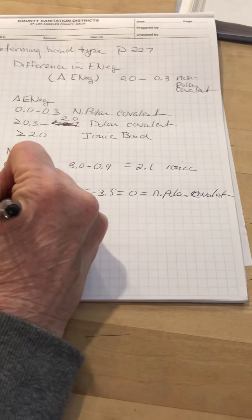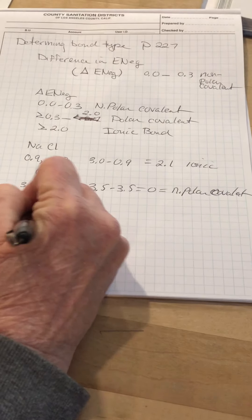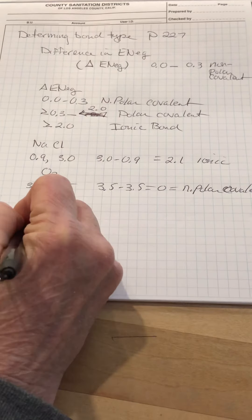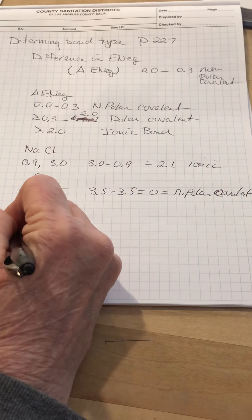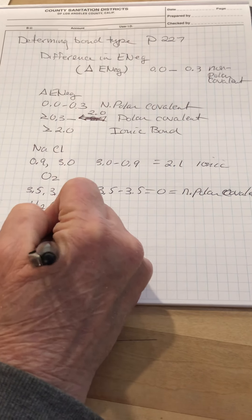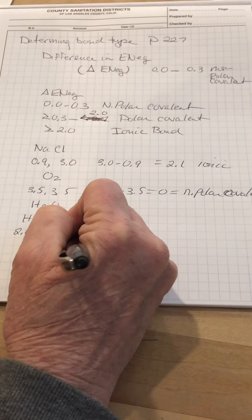If you look at water, water is going to be H and then an O and then another H. So you look up the electronegativity of hydrogen, it's 2.1. Oxygen we just saw is 3.5. The other hydrogen is 2.1.